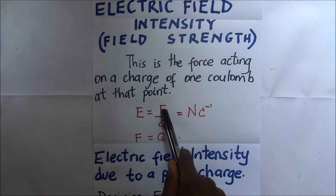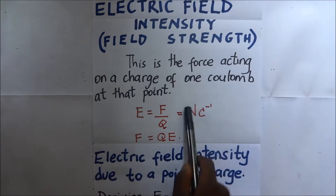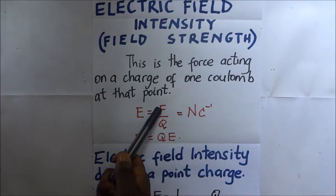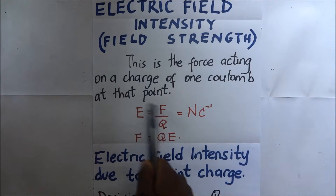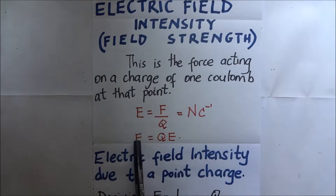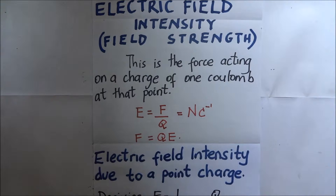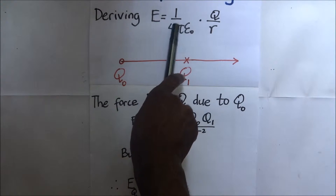Electric field intensity E is equal to the force of that field divided by the charge of one coulomb. The SI unit for electric field intensity is newtons per coulomb — newtons coming from force and coulombs from the charge Q. Rearranging into a flat equation, the force in an electric field is equivalent to the charge multiplied by the electric field intensity.